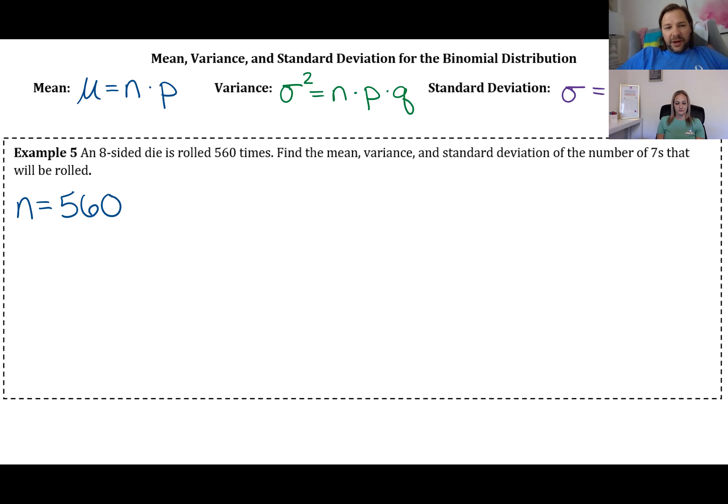And then we're trying to find x. X would be the number of sevens that will be rolled. So the probability of rolling a seven is one-eighth, because with an eight-sided die, we're assuming it's fair, and so you get a seven one out of eight times. And then q, of course, is one minus that one-eighth, or 0.875.